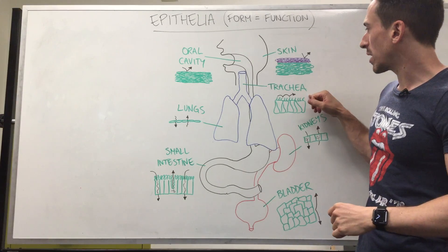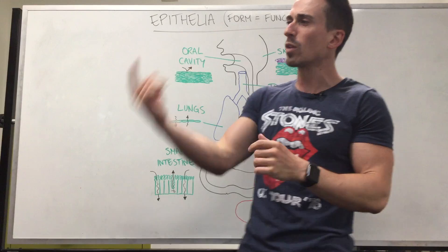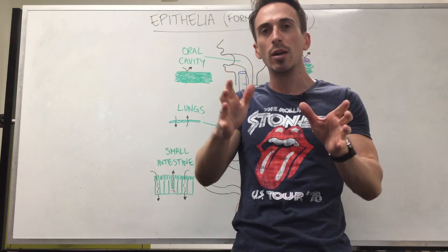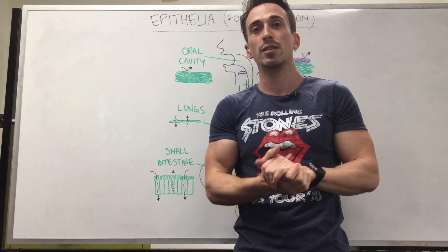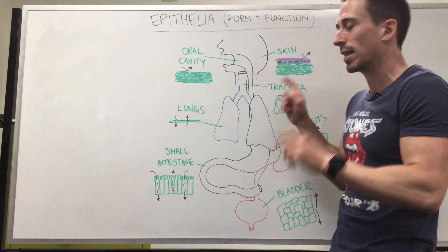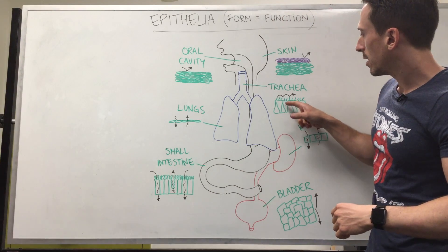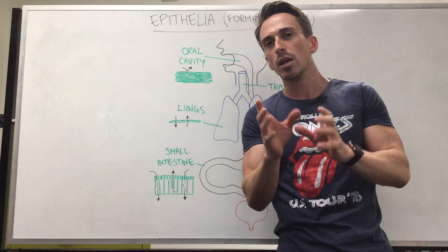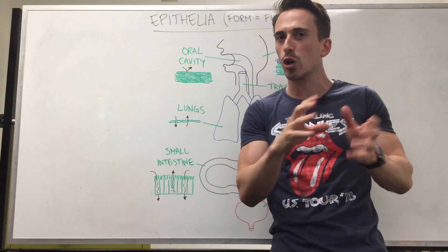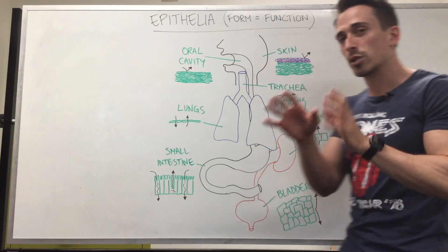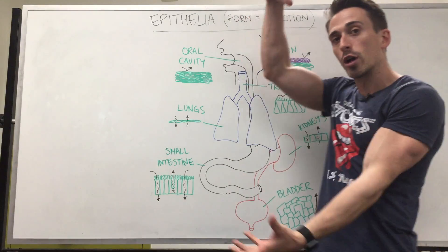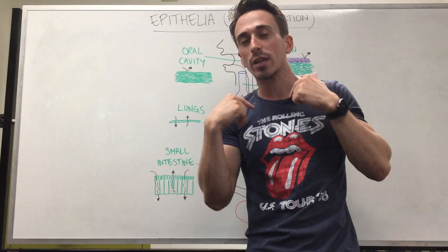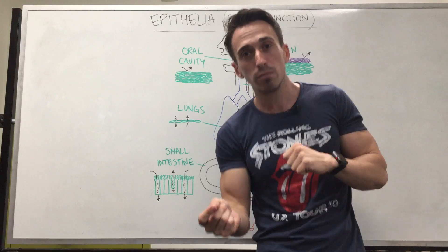Now let's look at the tricky one in our trachea — our windpipe. We bring air in and back out, mainly oxygen in and carbon dioxide out. We know the air we breathe isn't pure gas — it's filled with particulates and pollutants we don't want getting into our lungs. So we have columnar epithelia within our trachea. This columnar epithelia looks like many layers but is actually just one — we call this pseudo stratified. Pseudo means fake. In full, it's pseudo stratified columnar epithelia, shaped like columns, longer than wide, with little hairs on top called cilia. So the epithelia in our trachea is called pseudo stratified columnar ciliated epithelia.